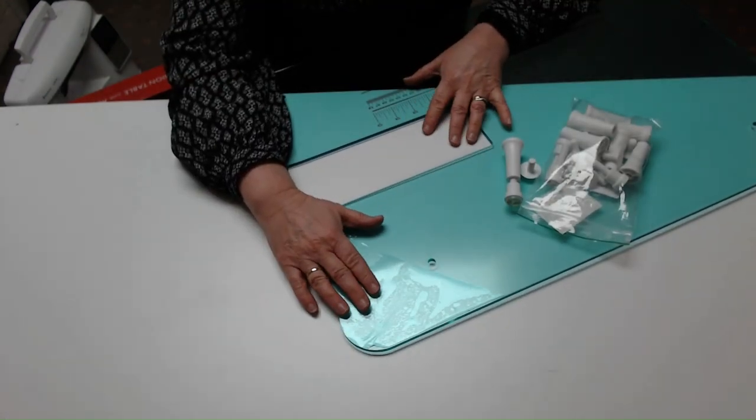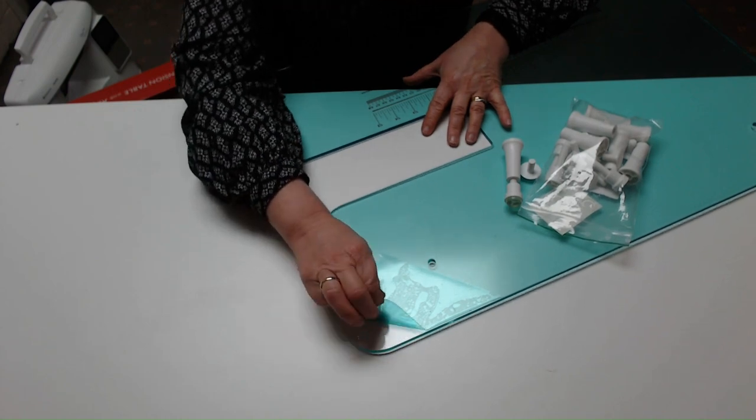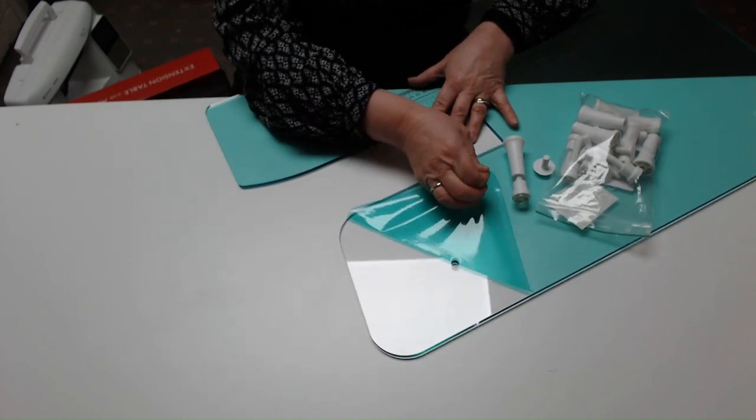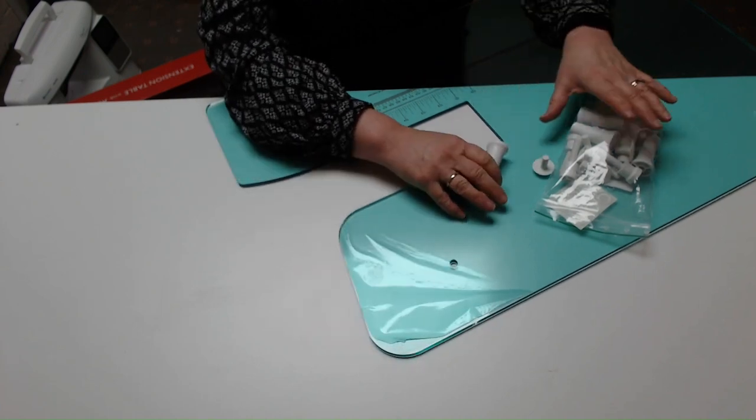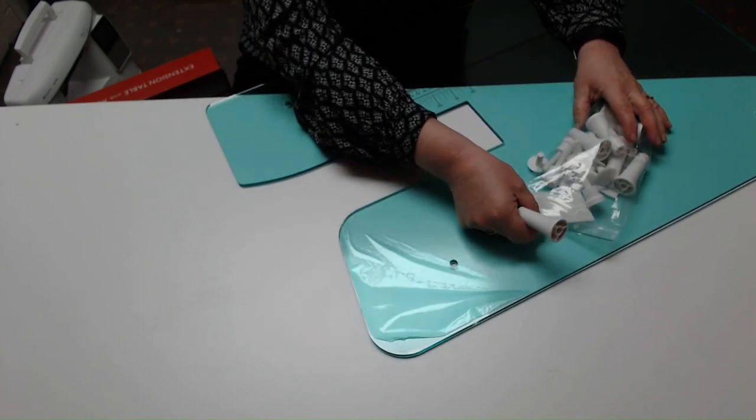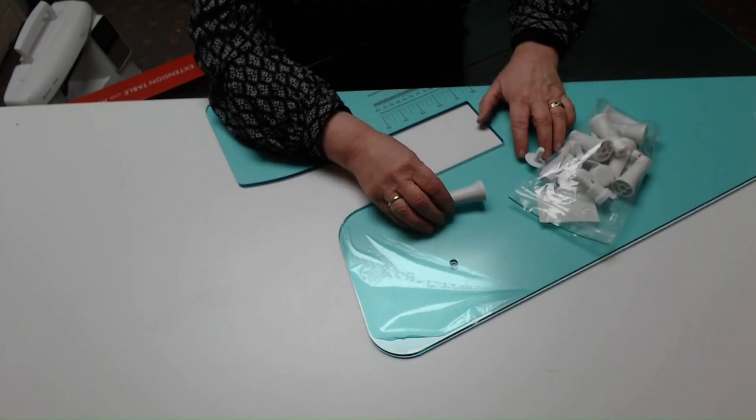The clear quilters table comes with a protective film on it, a green film, so you just need to peel that off and you'll see your nice clear table underneath. You'll also find a bag of legs and some little feet with it, and I'll show you how to assemble those.